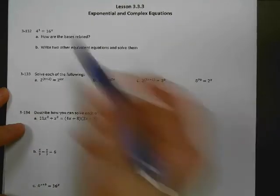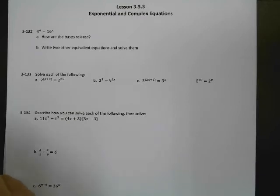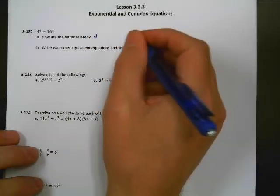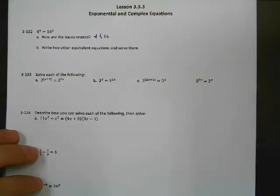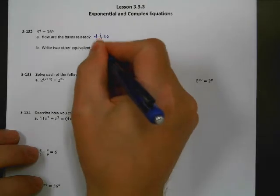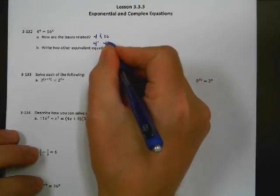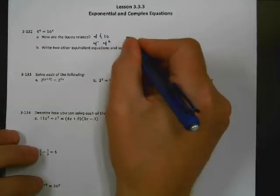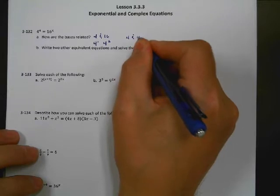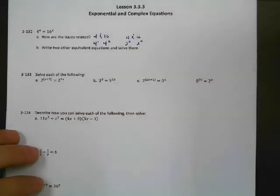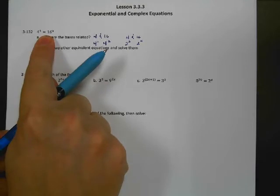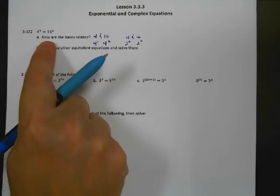So here we've got 4 to the 4th equals 16 to the x power, and we want to solve for x. The first thing we want to do is look at those two bases and see how they're related. I've got a base of 4 and a base of 16 — those should be related to each other. We can think of 4 as 4 to the 1st power and 16 as 4 to the 2nd power. We're going to solve this by looking inside and seeing if we can pull it apart.